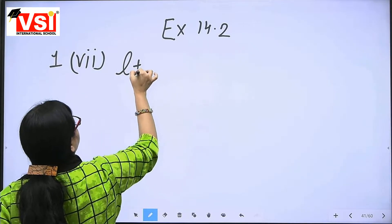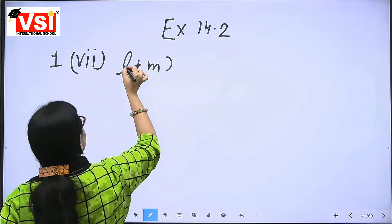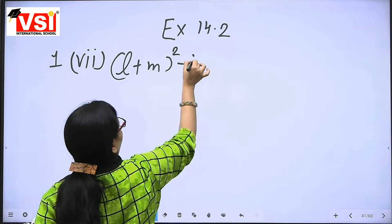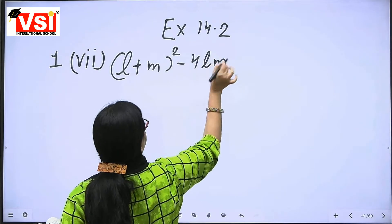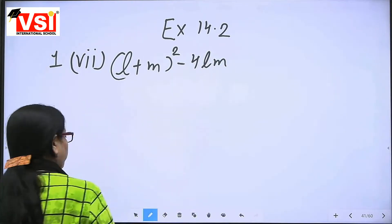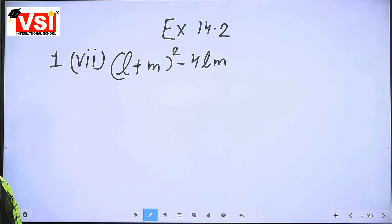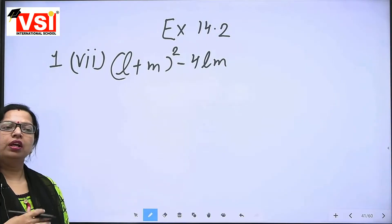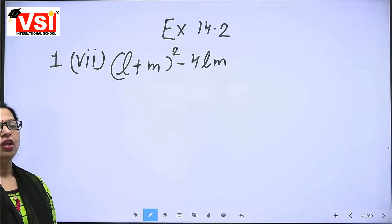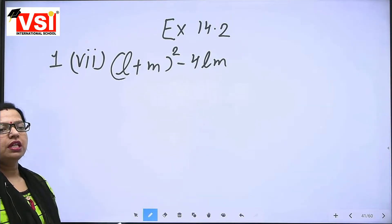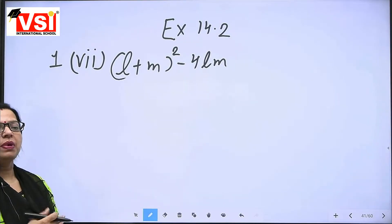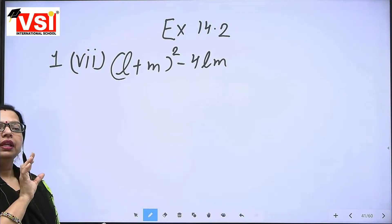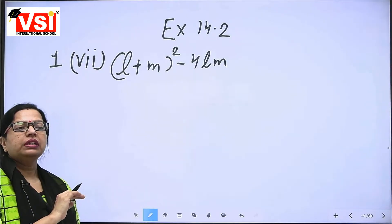L plus M whole square minus 4LM. We want to factorize this and use the other identities. We are making factors according to the identities. Yesterday we have done similar sums, and in those we already had the other three terms.